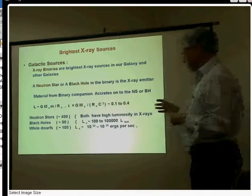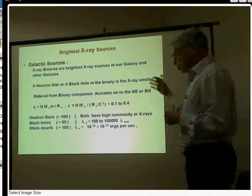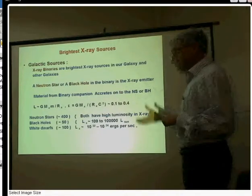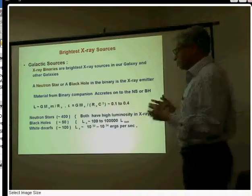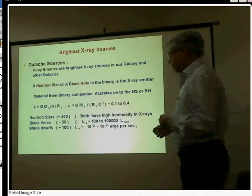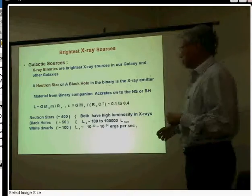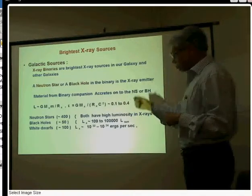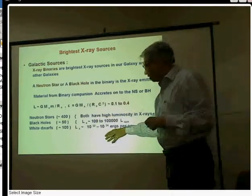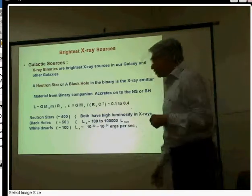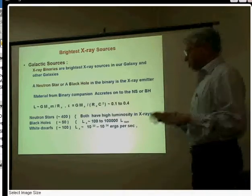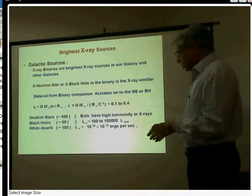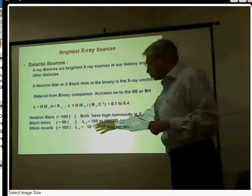As a result, matter from the companion star falling into the gravitational potential of the neutron star or black hole can attain very high temperature and very high energy, which is why X-rays are generated. We have discovered several hundred neutron star sources in our galaxy — over 400 of them — along with black hole sources. White dwarf sources are a little fainter, because a typical white dwarf has a diameter of the size of the Earth, about 5,000–6,000 kilometers, so their gravitational pull is less and their X-ray luminosity is lower.